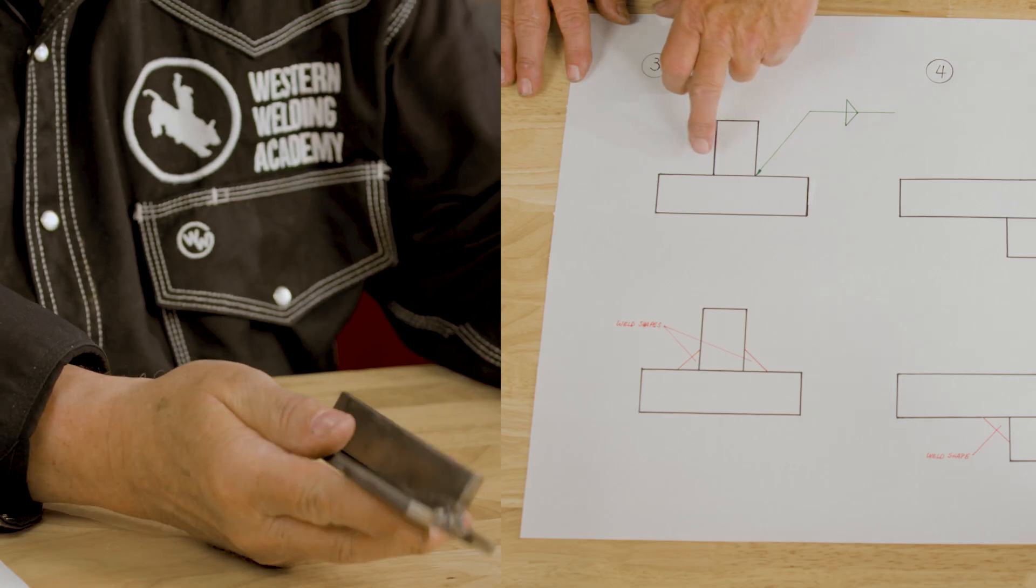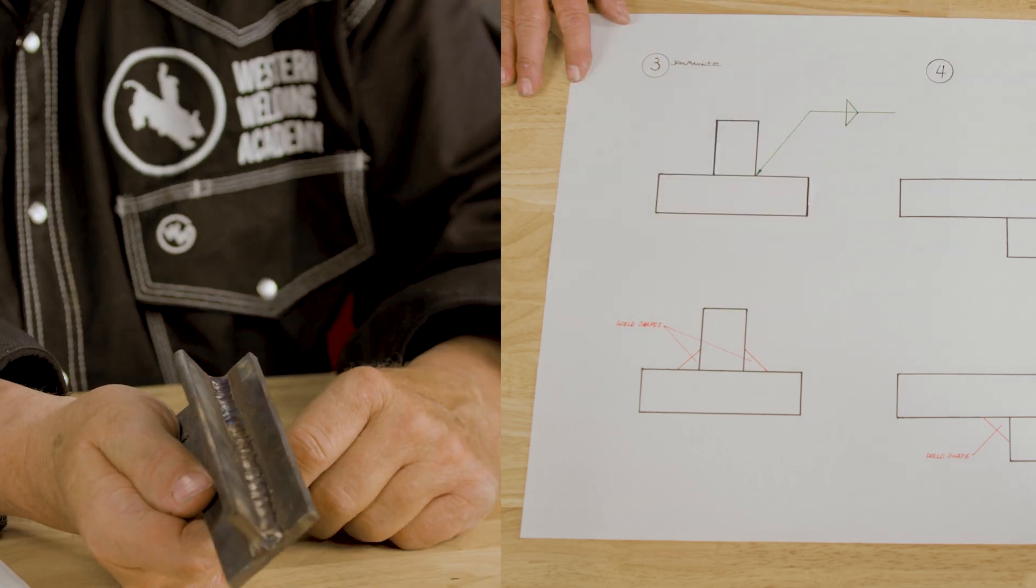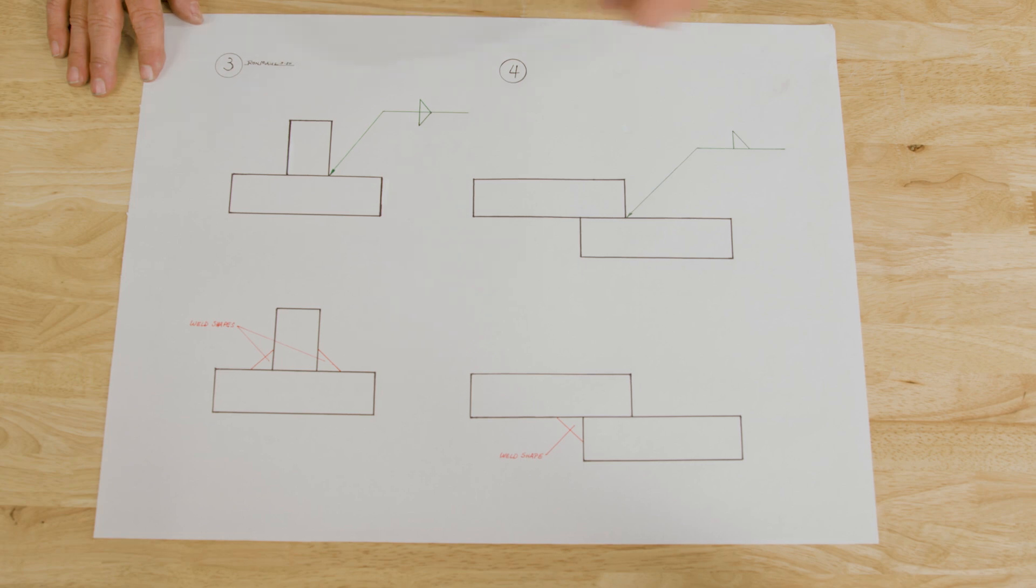So here you have two fillets, one on each side. This is what the shape of the weld would look like when you're done. This was obviously arrow side and other side.